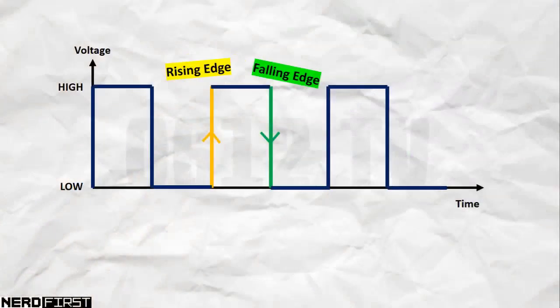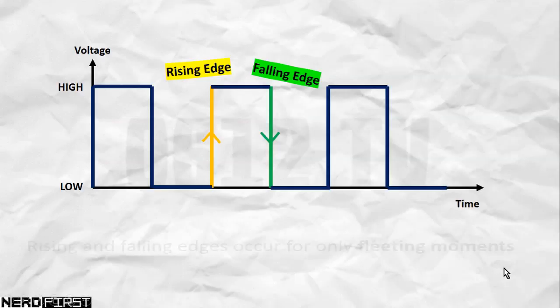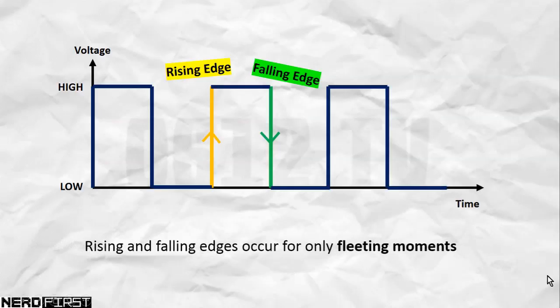If you're transitioning from low to high, we call that the rising edge. If we're transitioning from high to low, we call that the falling edge. Why do we need to go to so much trouble to detect a rising and falling edge? The reason is that rising and falling edges only occur for fleeting moments, which is very critical in certain circuits.